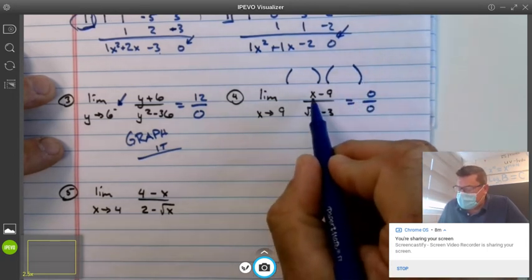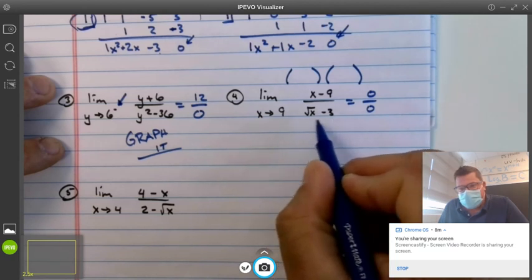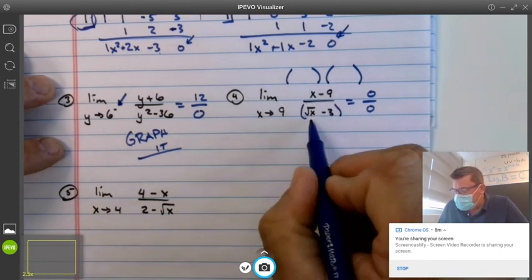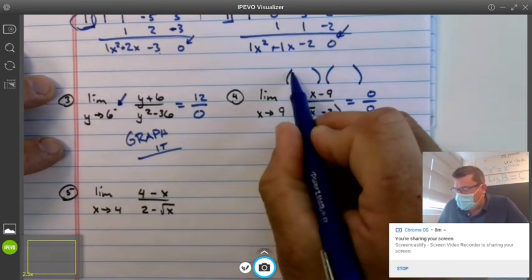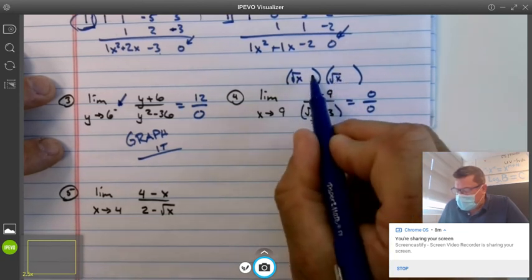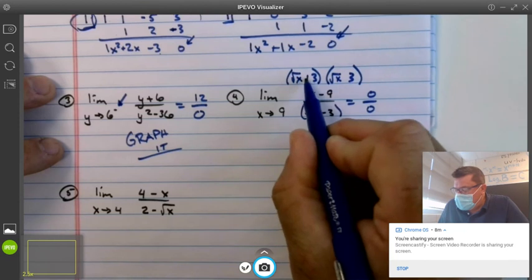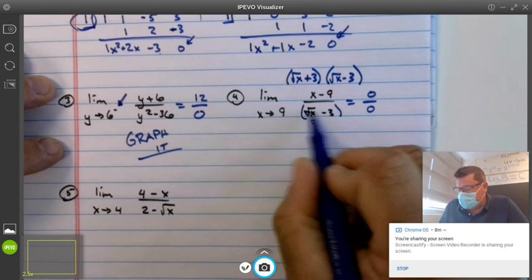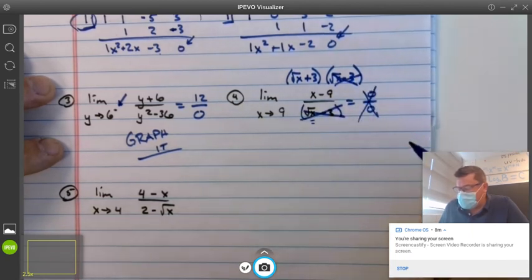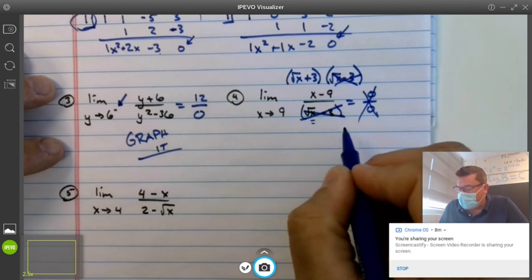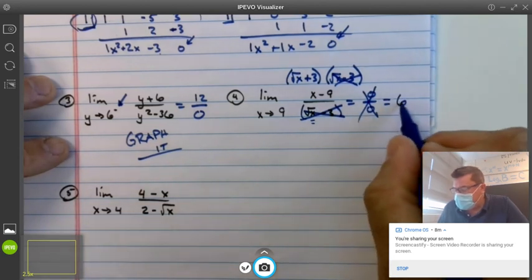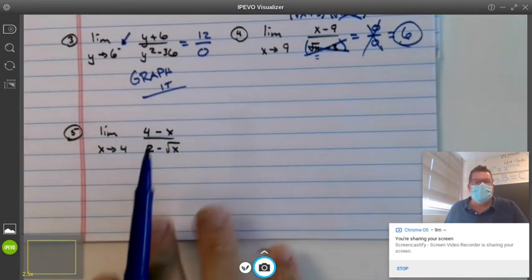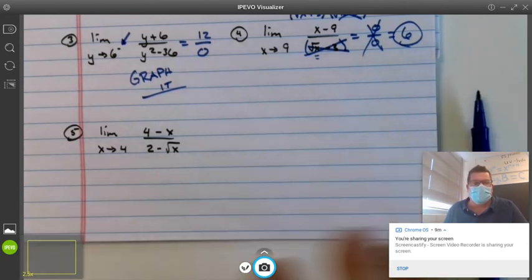What times what is x? And remember, we're trying to get a factor down here at the bottom to cancel out. So what times what's x? Here's the clue. Root x and root x. What times what's 9? 3 and 3. One's positive, one's negative. This cancels with that. It's no longer 0 over 0. You shove in the 9 and get 3 plus 3 is 6. I hope these examples help. This problem down here is very similar to number 4. You guys can give it a shot.